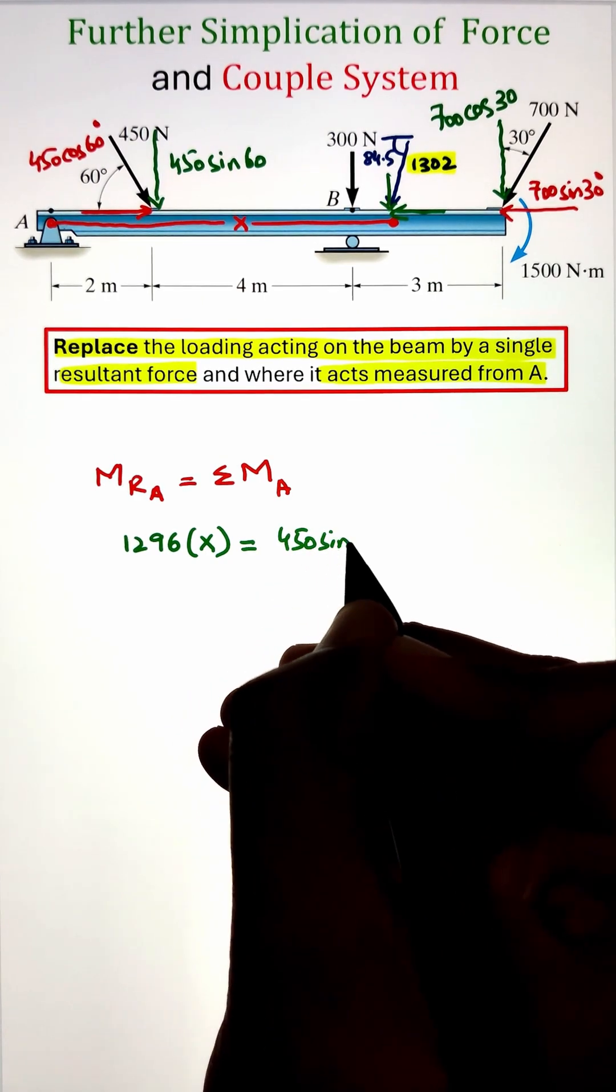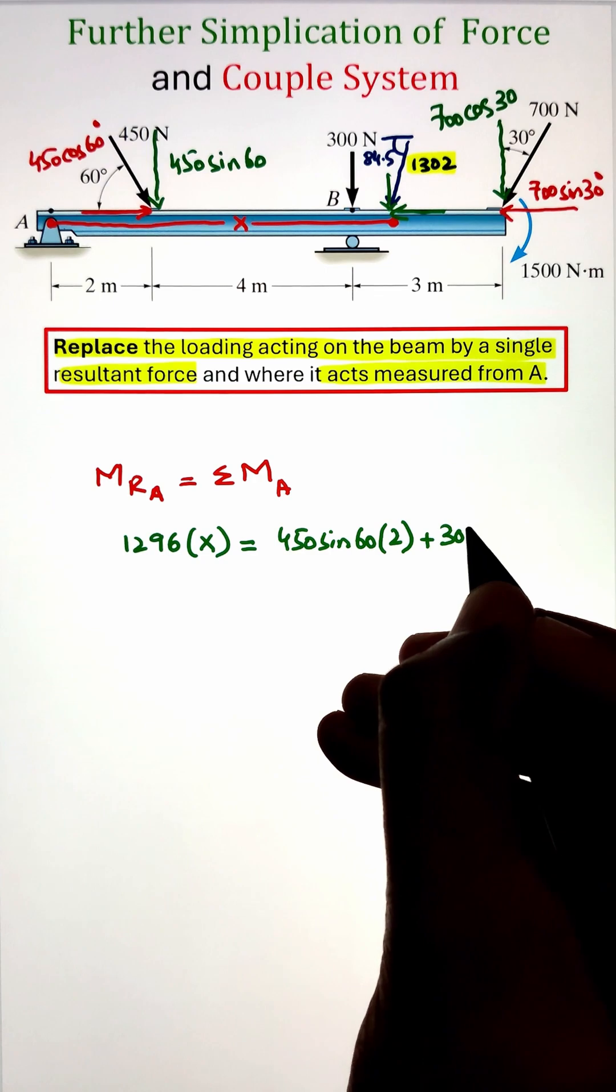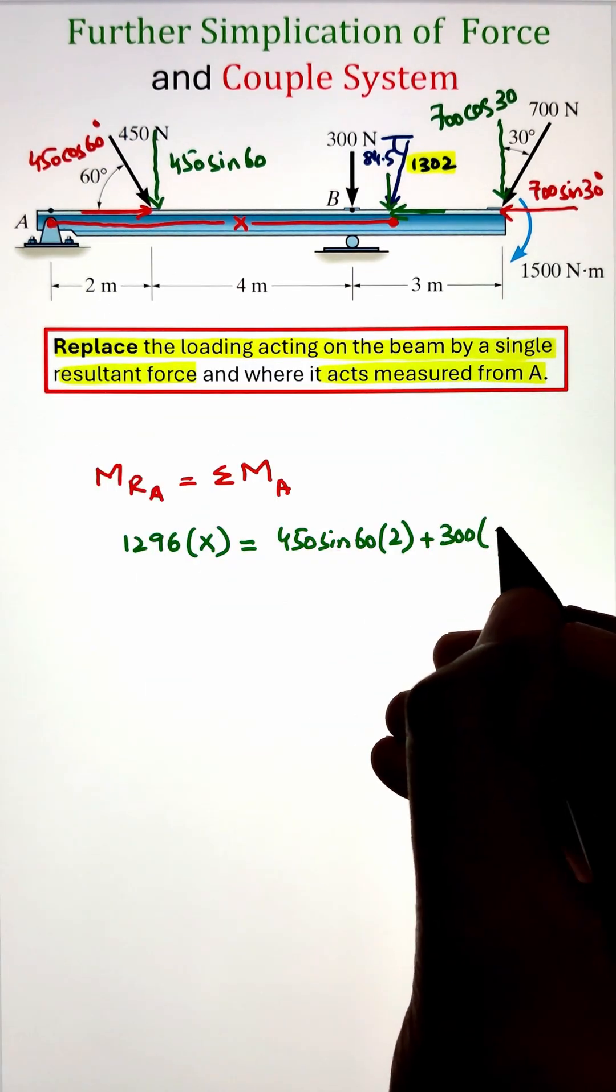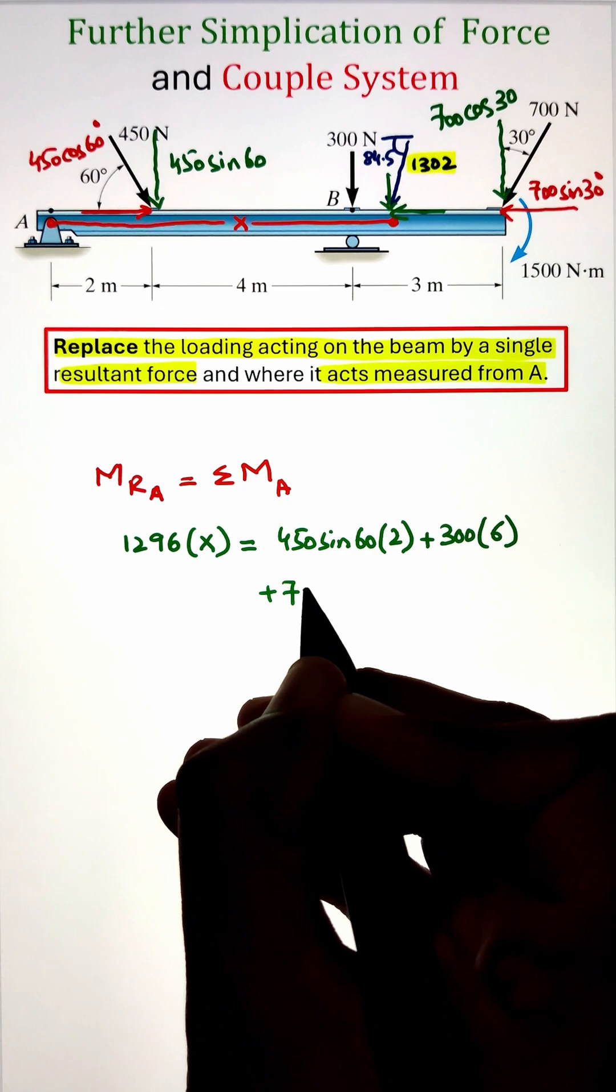So our 450 sine 60 have a moment arm of 2 that is making a clockwise moment. Similarly, 300 newton force is also making a clockwise moment with a moment arm of 6 meters.